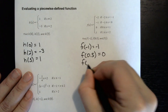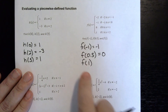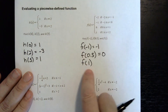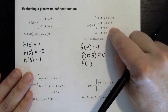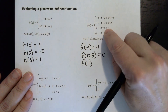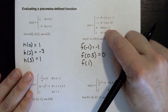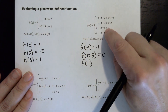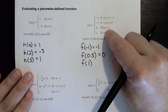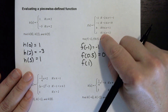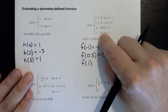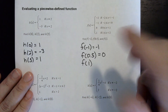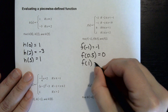For f of 1: checking the pieces, the third piece says x less than 1 with no equal sign, but the fourth piece includes the equal to, so 1 falls in the fourth piece, and the answer is 1.